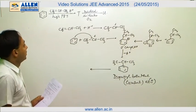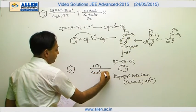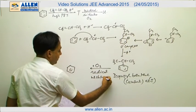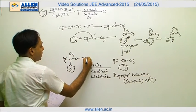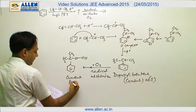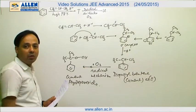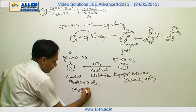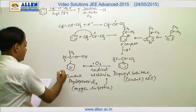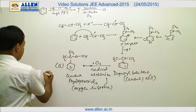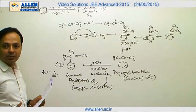Then T undergoes reaction with heat and oxygen via a radical mechanism, giving cumene hydroperoxide. Basically, the last step is called oxygen insertion — oxygen is inserted — and this is U. So the answer is B. This reaction is used for the industrial preparation of phenol.